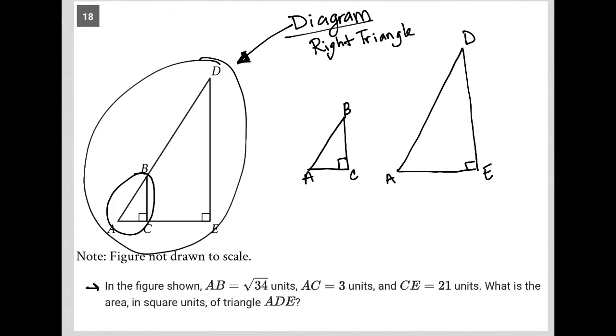And the question tells me that AB is square root 34 units. So I'm going to label that as root 34. It then tells me that AC is equal to three units. So I'm going to label that. CE is equal to 21. ADE is a portion of AE. So I can go back here and put a C if I'd like, and just say, okay, from there to there is 21. What is the area in square units of triangle ADE? So we want the area of this triangle here.